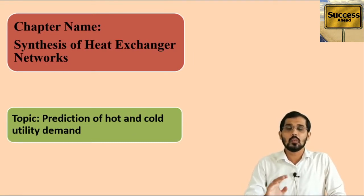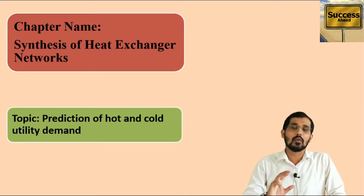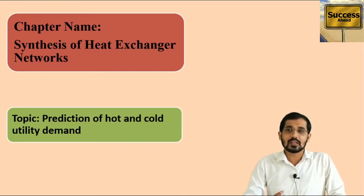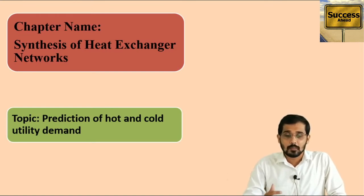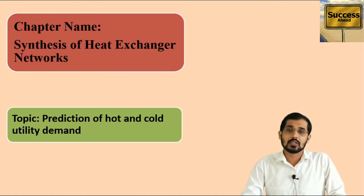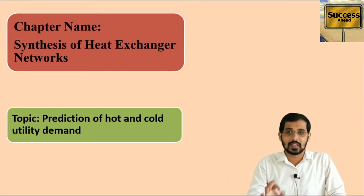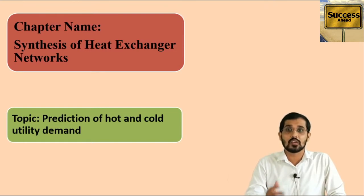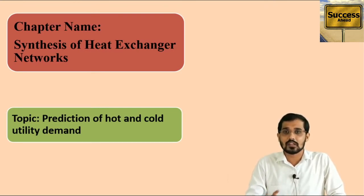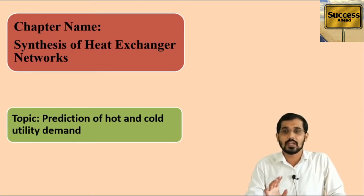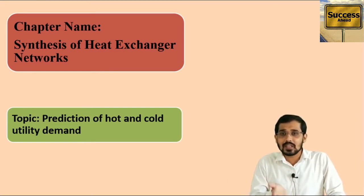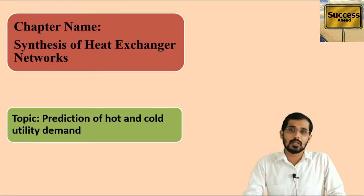Before that, you should know what is the meaning of cold utility and hot utility. These are nothing but extra amount of energy, extra amount of heat being provided in process industries. As I told you in the last lecture, we have used process integration, energy integration, or heat integration of various process streams to minimize energy consumption in process industries. In this lecture, I will explain how to find extra utility demands — those are cold or hot utilities.